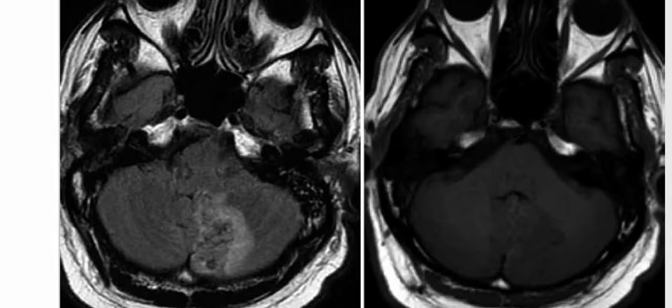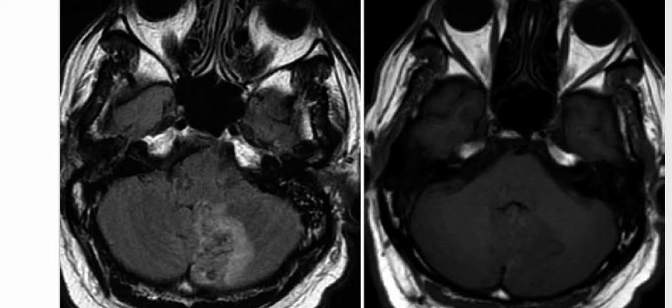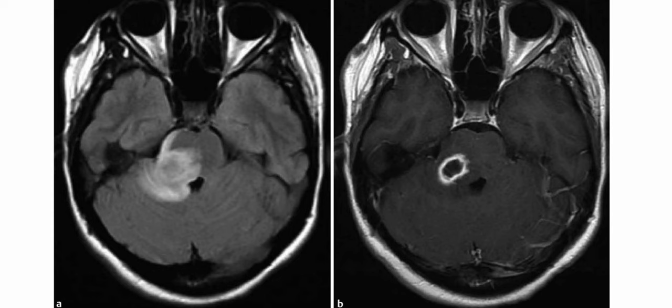Considering this typical imaging picture in an adult patient with a posterior fossa lesion, the top differential should be subacute posterior inferior cerebellar artery territory infarct — that is, PICA infarct. Other differentials include metastatic process, hemangioblastoma, vascular malformation, or hypertensive hemorrhage. The diagnosis is subacute PICA infarct.